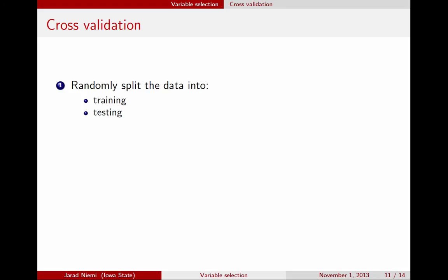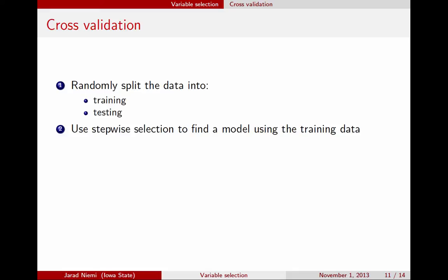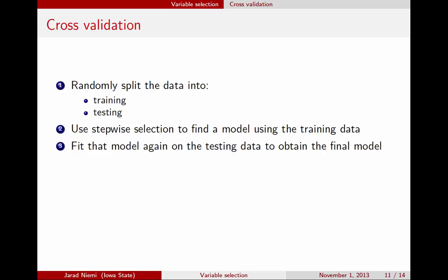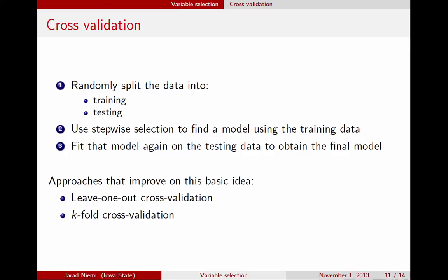An improved approach is cross-validation. The idea is to split your data randomly into two groups: a training group and a testing group. First, use a stepwise selection procedure on the training data, then fit the model again on the testing data. Only those variables that are significant in the last step are ones you'd want to keep. This is just one basic version of cross-validation — there are many ways to do it, and this isn't the best one, but it gives a flavor for what's going on.